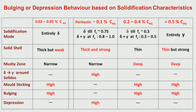In the last session, I talked about the bulging or depression behavior based on solidification characteristics for different chemistry ranges for plain carbon, low-alloy steels, and stainless steels. For different carbon concentrations or carbon equivalent concentrations, what will be the solidification mode, what is the solid shell thickness and strength, what is the mushy zone — if the solid shell is thick the mushy zone will be narrow, if thin it will be quite wide. Where the delta-to-gamma transformation is taking place, whether near solidus, is a real point of worry because that temperature region is brittle, so there is a possibility of crack formation.